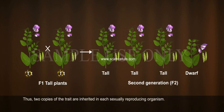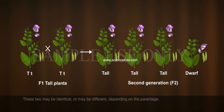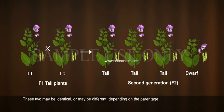Thus, two copies of the trait are inherited in each sexually reproducing organism. These two copies may be identical or may be different, depending on the parentage.